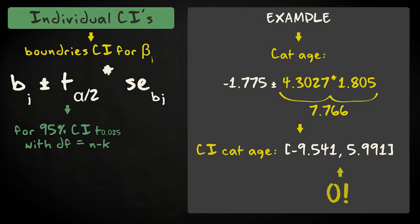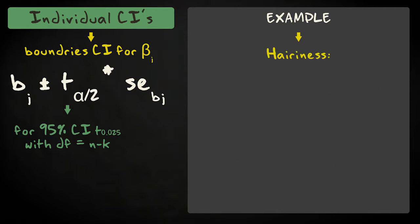This is a very wide interval that contains zero. This is not strange, since there are only five observations.